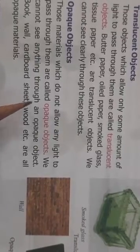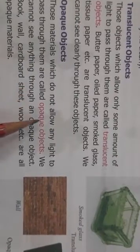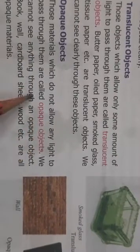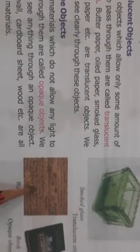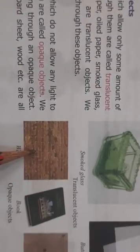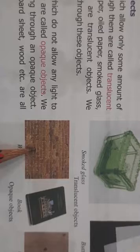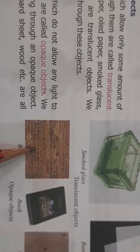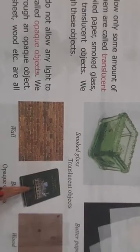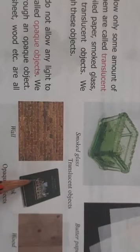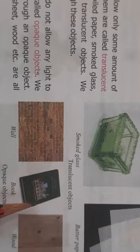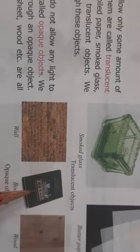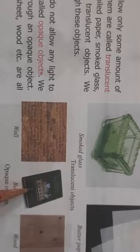Opaque objects — the materials which do not allow any light to pass through them are called opaque objects. That means through opaque objects we cannot see anything, like a book, wall, cardboard sheets, wood, table. All these are examples of opaque materials, because you cannot see through them.